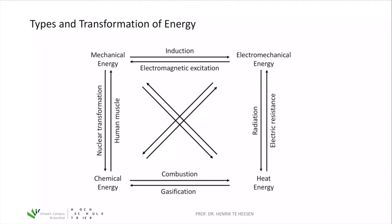There are four different types of energy. On the upper left we have mechanical energy, then electromechanical energy, chemical energy on the lower left, and finally heat energy. There is always the possibility to transform between different energy forms. We can't destroy energy — we can only convert it into a different type. For example, mechanical energy can be transformed to electromechanical energy by induction: moving electrons in a magnetic field gives us electrical current.